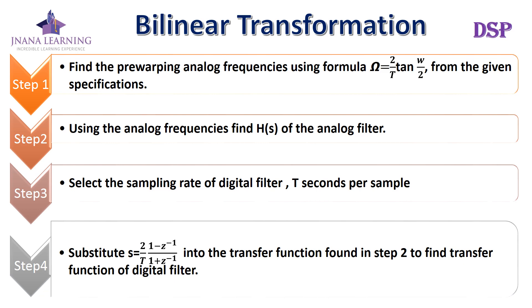Step one: find the pre-warping analog frequencies using the formula omega = (2/T) * tan(omega/2), from the given specifications. Step two: using the analog frequencies, find H(s) of the analog filter — that is, find the transfer function of the analog filter. Step three: select the sampling rate of the digital filter, that is T seconds per sample. Step four: substitute s = (2/T) * (1 - z⁻¹) / (1 + z⁻¹) into the transfer function found in step two to find the transfer function of the digital filter.